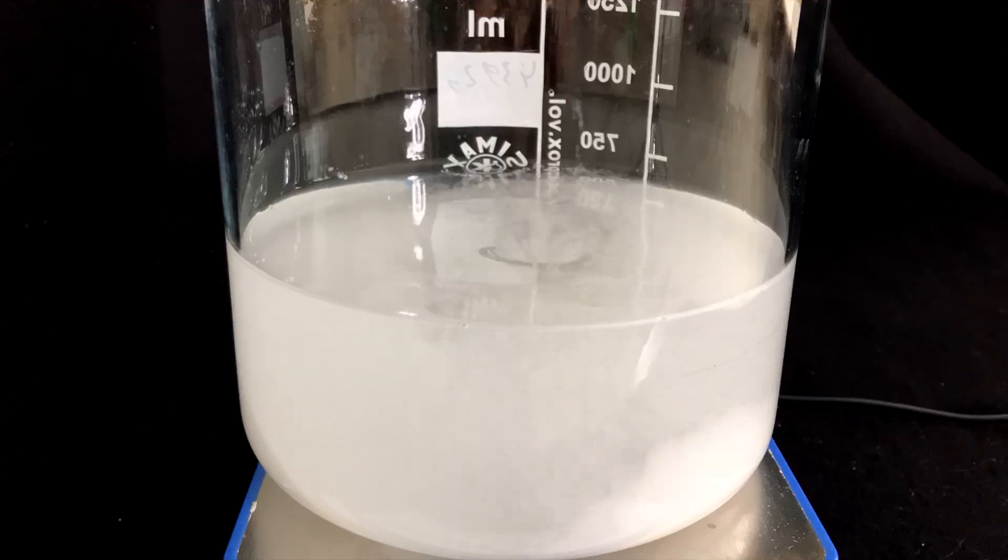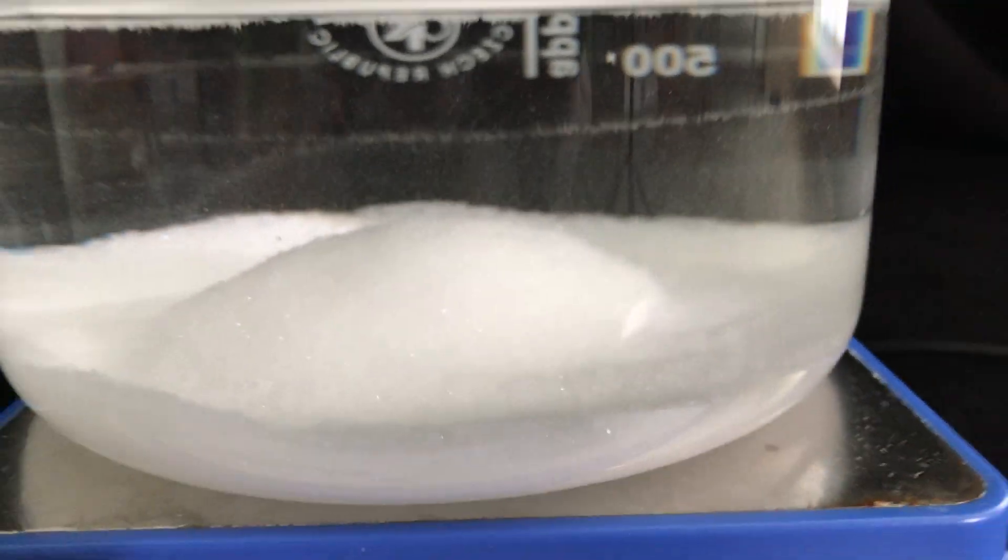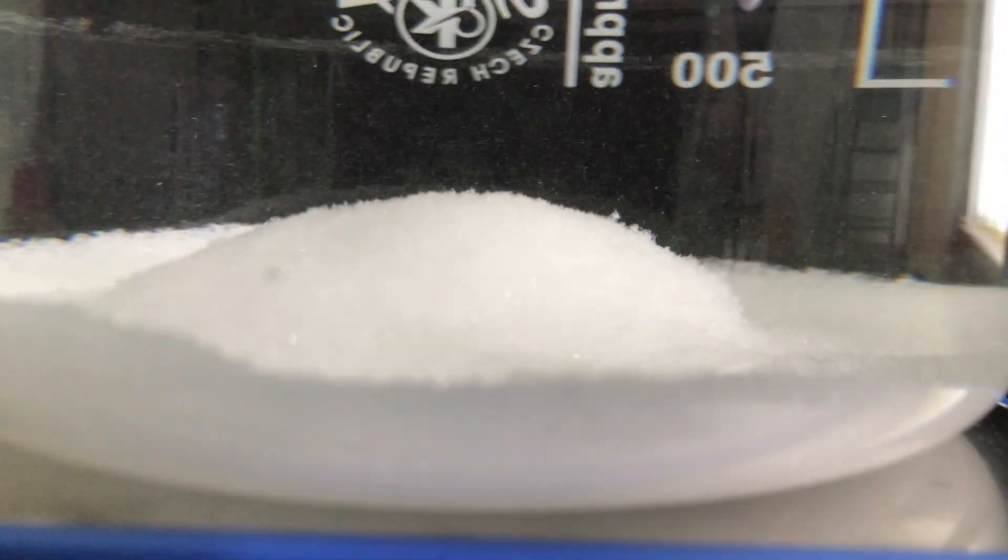The magnetic stirrer was turned off and fortunately mercury thiocyanate quickly settled down. Mercury thiocyanate is a white fluffy powder. The next step is going to be to separate it from the liquid. As the powder is really coarse and I don't want to contaminate my vacuum filtration setup, a gravity filtration should suffice.